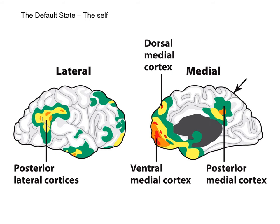The brain areas postulated to be involved in the default network include a lot of the central medial cortical networks: the dorsal medial cortex, the ventral medial frontal cortex, the posterior medial cortex, the precuneus, the inferior parietal lobule, the temporal parietal junction, and laterally the lateral temporal cortex. These are the networks most associated with stronger engagement when a person is in a default state.